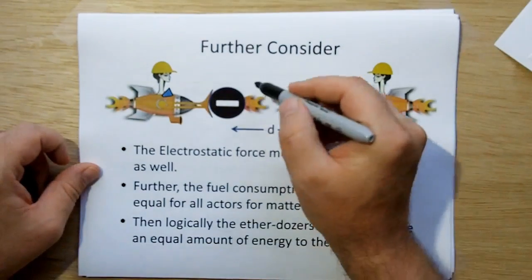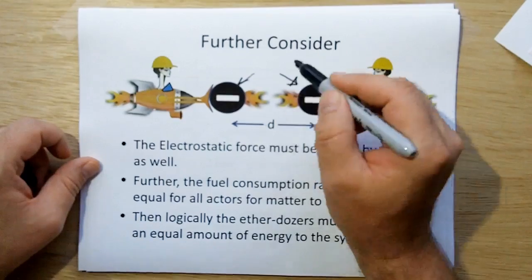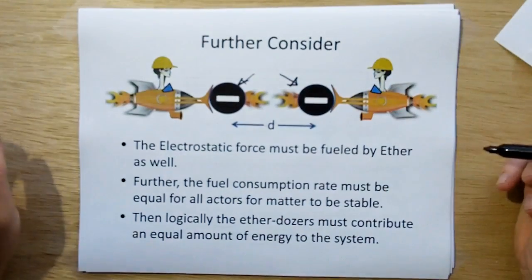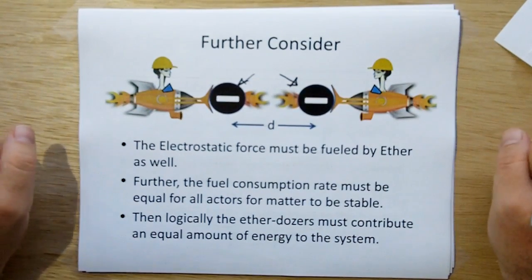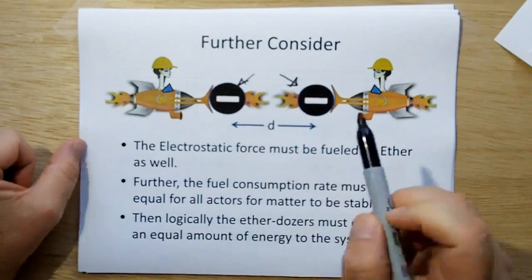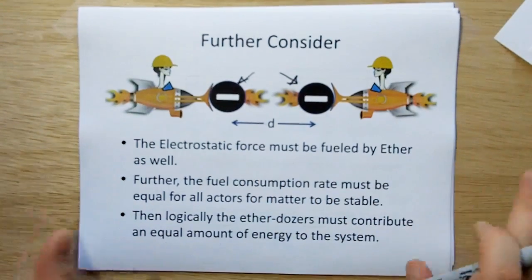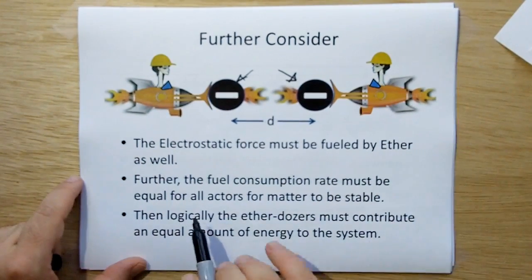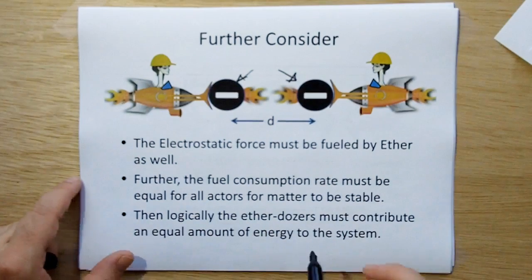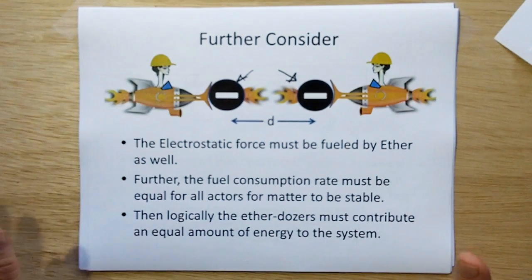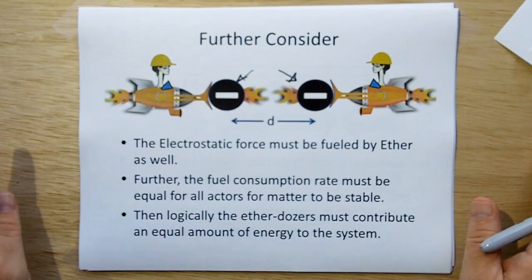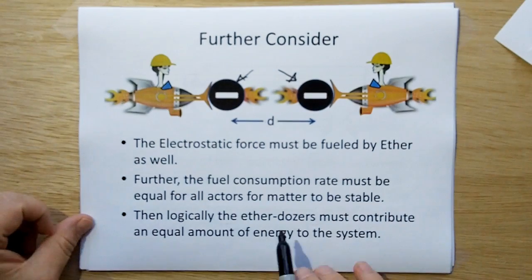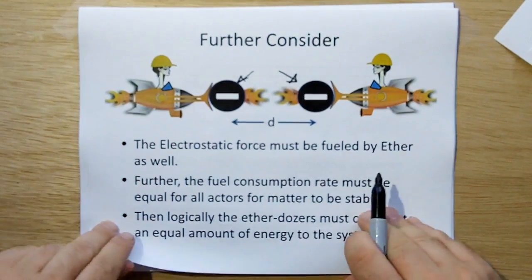Okay, but we also have to consider that the electrostatic force, the repulsive forces of these Coulomb charges, must be fueled by ether as well. And therefore I'm showing the little flames on the charges as they're opposing. And the consumption rate must be equal for all actors for matter to be stable. Okay, then logically the ether dozers must contribute an equal amount of energy to the system.